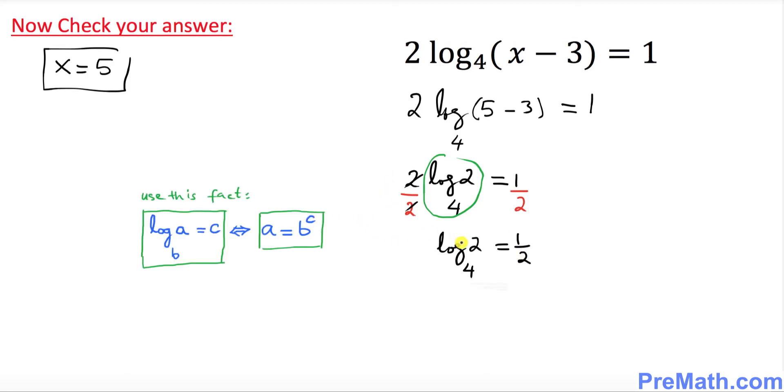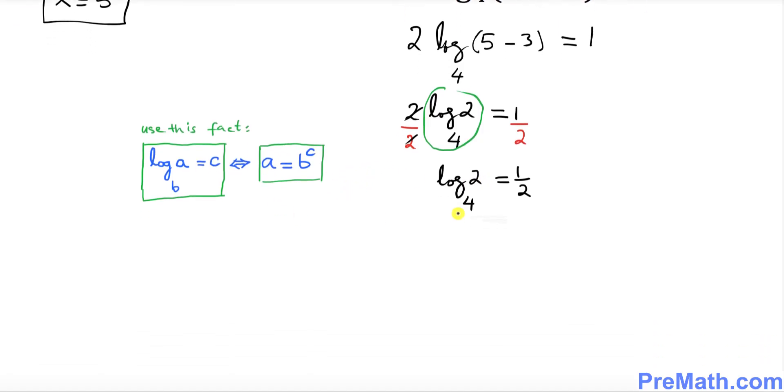And now we want to convert this logarithmic equation into an exponential one by using this fact on the left hand side. So that could be written as 2 equals to 4 power 1 over 2. And you know that the 4 power 1 over 2 is the same as square root of 4 which is the same as 2. So that means the right hand side becomes 2 as well.